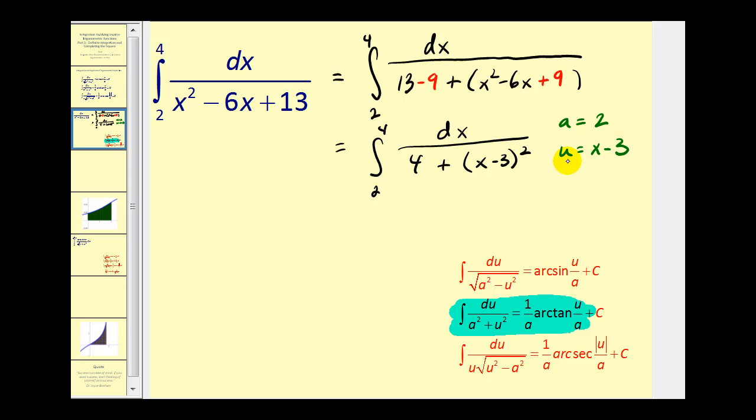Let's go ahead and find du to determine if we have to perform a substitution. And du is equal to dx, which tells us we do not have to perform u substitution. We can go ahead and find the antiderivative in this form.